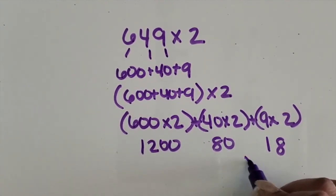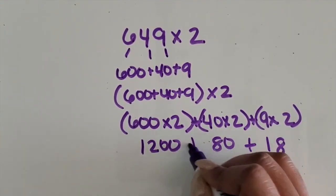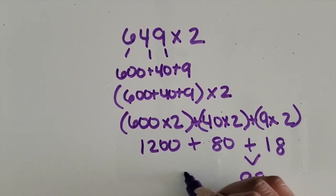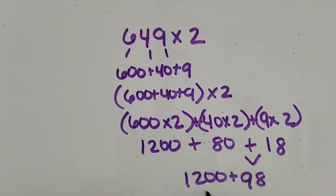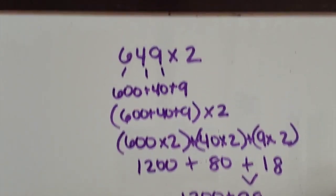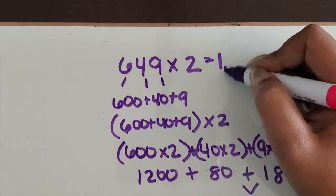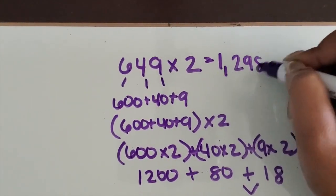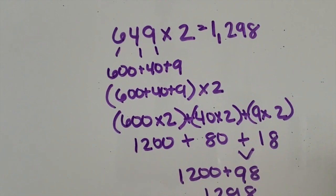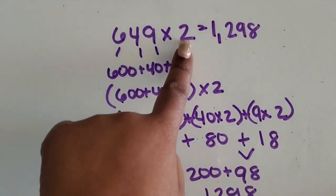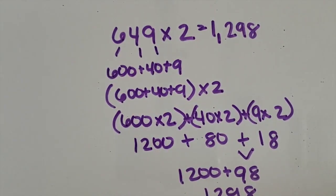We know 80 and 18 gives us 98. And 1,200 plus 98 gives us 1,298. So the total product is 1,298. We multiplied a three-digit number by a one-digit number using the distributive property.